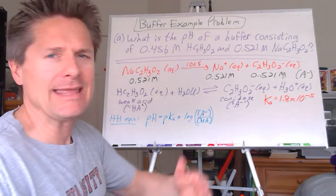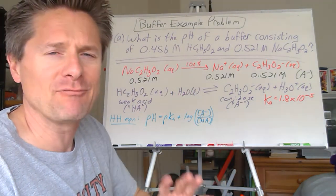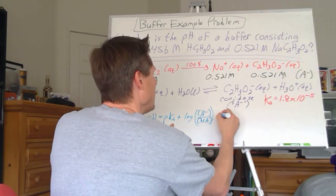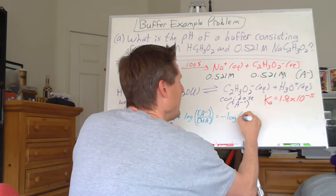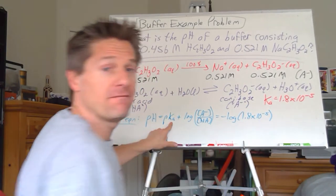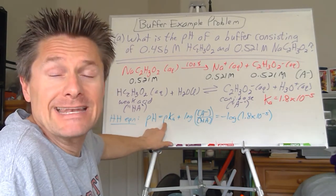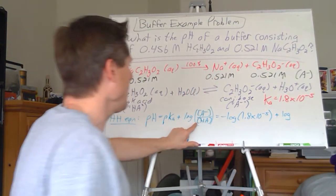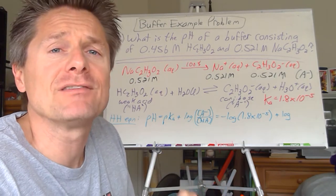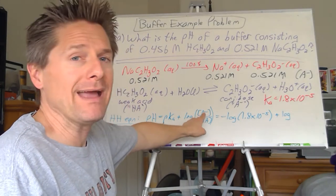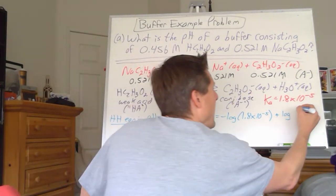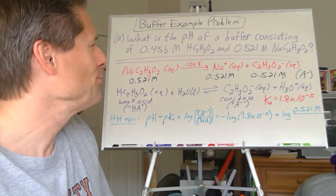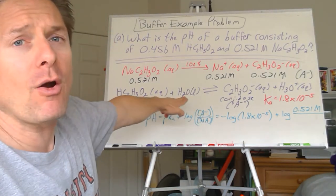Let's work through it. pH = negative log of Ka, which is 1.8 × 10⁻⁵, plus the base-10 log of the conjugate base over the weak acid. The A⁻ is 0.521 molar (the acetate ion), divided by HA which is the acetic acid. The molarities will cancel out.